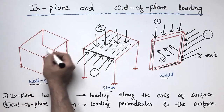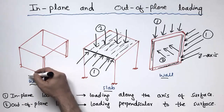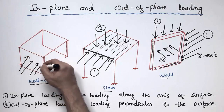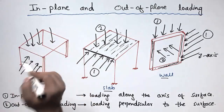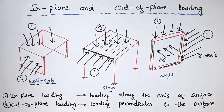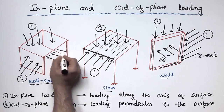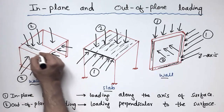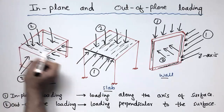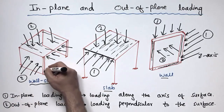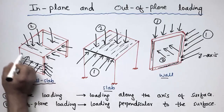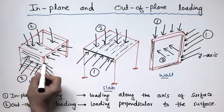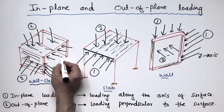Now considering the combined wall and slab example: the slab is at the top and the wall is on the side. The load perpendicular to the surface of the wall, and the load from above acting perpendicular to the slab surface — both of these are categorized as out-of-plane loading, labeled as number 2. The loading acting along the axis of the slab or along the axis of the wall is known as in-plane loading.